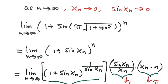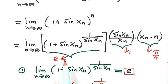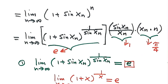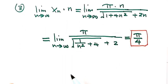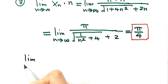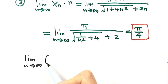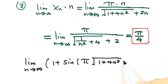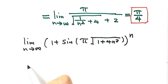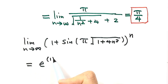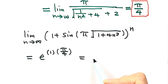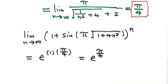So now combining all three parts: the first part approaches e, the second exponent is 1, and the third part is π/4. Therefore the limit as n goes to infinity of (1 + sin(π√(1 + 4n²)))^n equals e^(π/4). That is the answer. Thanks for watching.